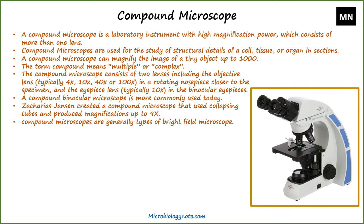A compound microscope can magnify the image of a tiny object up to 1000x. It consists of two lenses: the objective lens, typically 4x, 10x, 40x, or 100x in a rotating nosepiece closer to the specimen, and the eyepiece lens, typically 10x, in the binocular eyepieces. Zacharias Janssen created a compound microscope that used collapsing tubes and produced magnifications up to 9x. Compound microscopes are generally a type of bright field microscope.